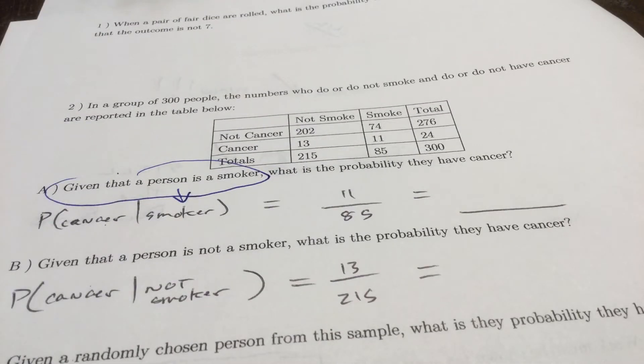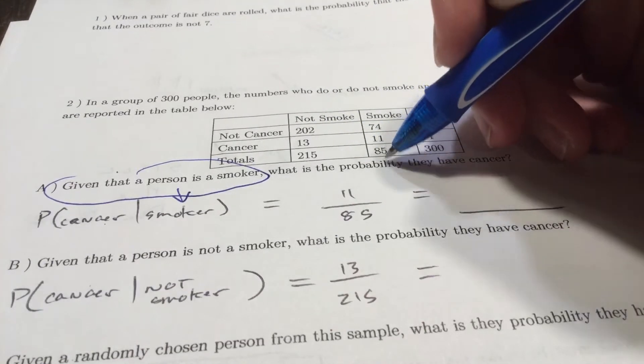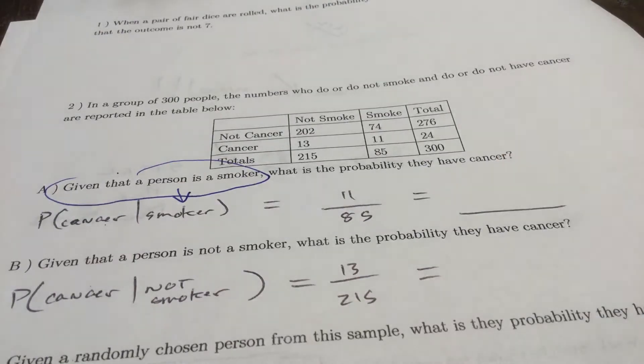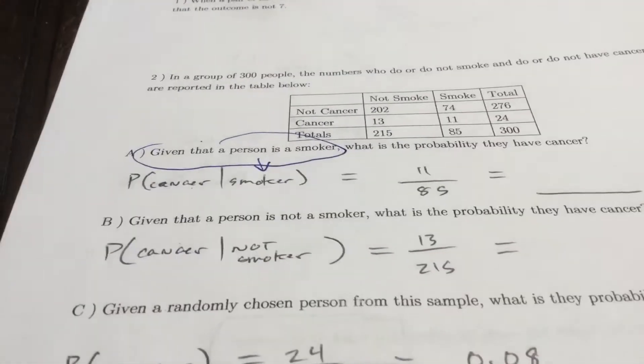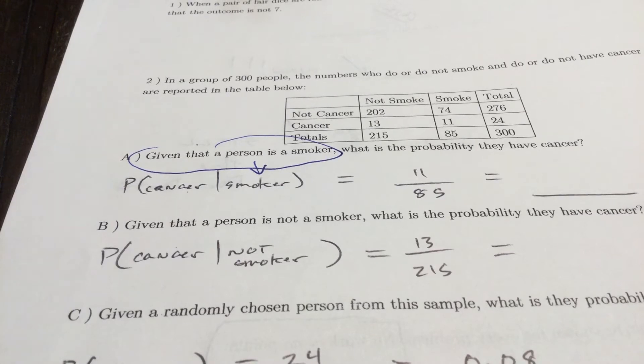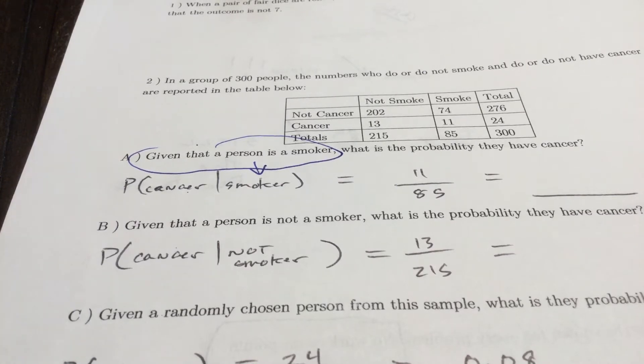Given that they're a smoker, how many people smoke? 85. How many of them intersect with smoking and have cancer? That is 11. Then give me the probability rounded to two decimals. That's 0.13, something like that.